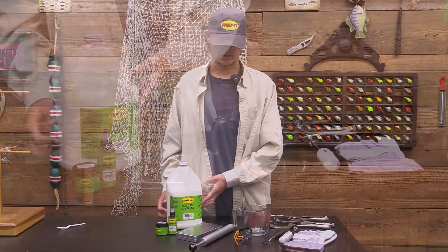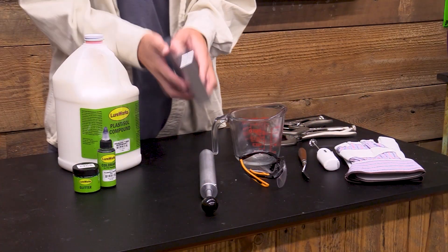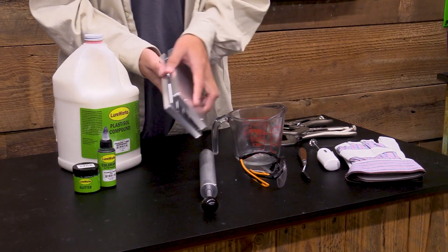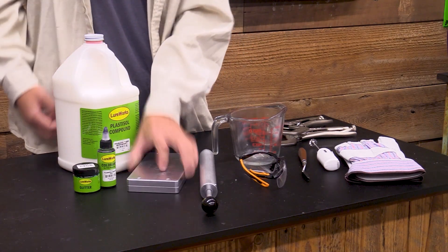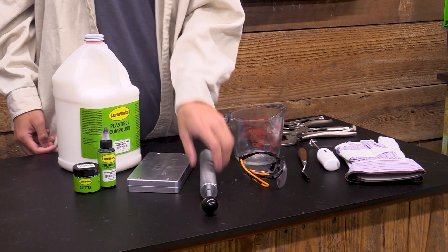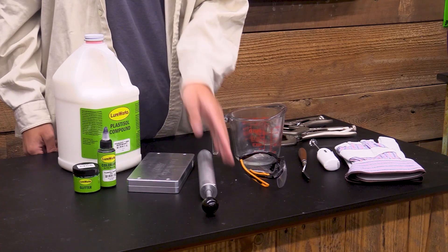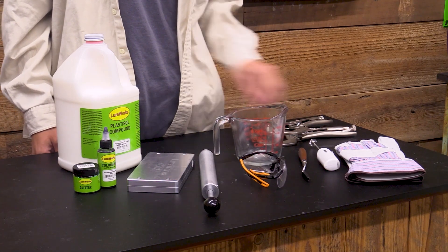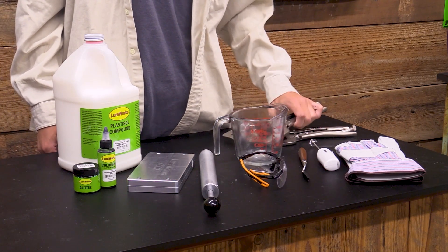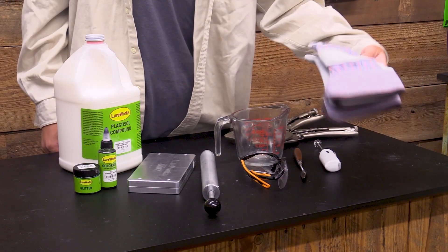Today we'll be using the LureWorks medium soft plastic as well as the LureWorks 5 inch stick bait mold. We've got our colorant and glitter of choice for today as well as an injector, safety glasses, a microwave safe cup, clamps for your mold, a mixer, and safety gloves.